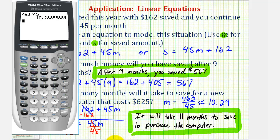Just to illustrate this, notice if we saved for 10 months, we'd have 162 plus 45 times 10. Notice that's not enough to purchase the computer. So if we save for one more month, or 11 months,